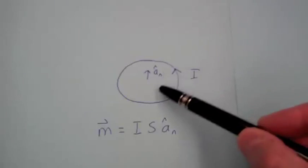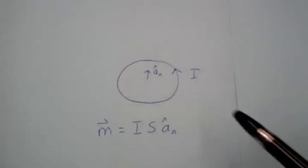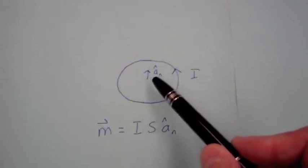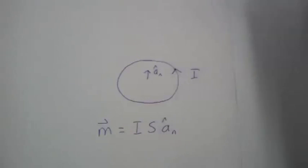the cross-sectional area of the loop that the current is going around, and we give it a direction, and the direction is defined by this unit normal to the loop